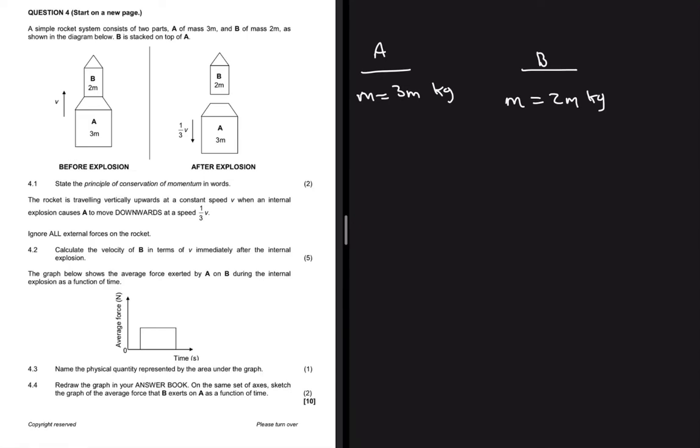After the explosion, A goes down and B keeps going up. Question 4.1 asks to state the principle of conservation of momentum. The total linear momentum in an isolated system is conserved - the sum of momentum before equals the sum of momentum after.